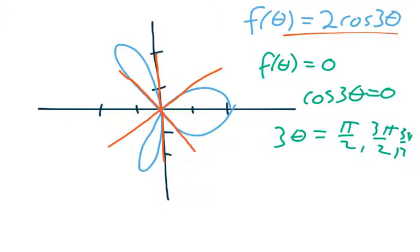So that means this first one will be theta equals pi over 6, dividing both sides by 3. So that's this one. So this slope here is pi over 6. That's the line theta equals pi over 6. And then our line keeps going through to here.